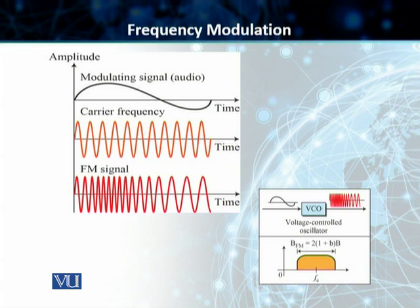And then, you get a frequency modulated signal. Students, in the case of FM transmission, the frequency of the carrier signal is modulated to follow the changing voltage levels or amplitude of the modulating signal.